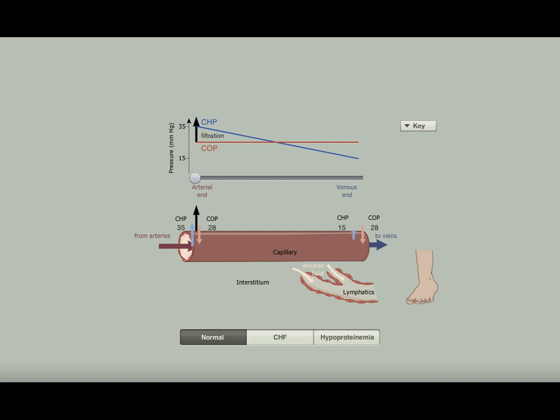This diagram lets you explore how the Starling forces vary over the length of systemic capillaries. When these forces are thrown out of balance, as in the disorders shown here in addition to the normal state, fluid may accumulate in tissues and cause visible swelling known as edema.